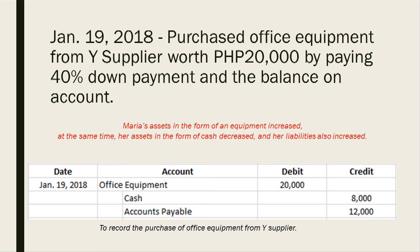On January 19, 2018, she purchased office equipment from Y Supplier worth 20,000 pesos, paying 40% as a down payment with the balance on account. Maria's assets in the form of equipment increased, her assets in the form of cash decreased, and her liabilities also increased. The journal entry is: debit office equipment 20,000 pesos, credit cash 8,000 pesos (40% of 20,000), and credit accounts payable 12,000 pesos.